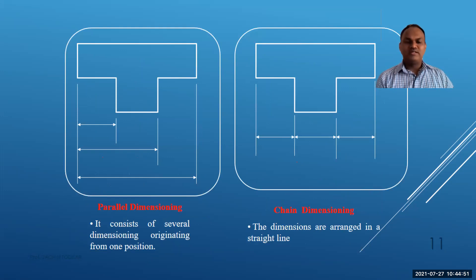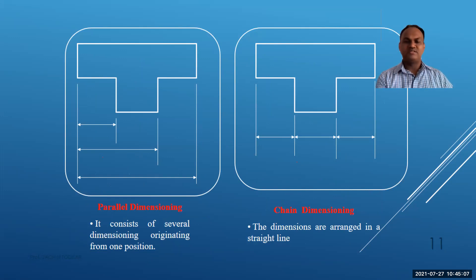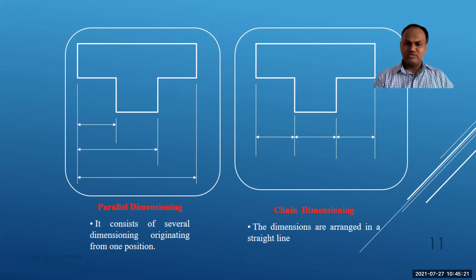Parallel dimensioning consists of several dimensions originating from one position — starting from one point and showing the respective positions of all parts. Chain dimensioning arranges dimensions in a single straight line, each relative to the previous one. In chain dimensioning we write X, Y, and Z for the respective positions.